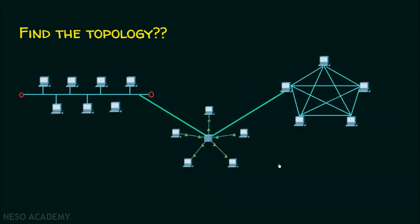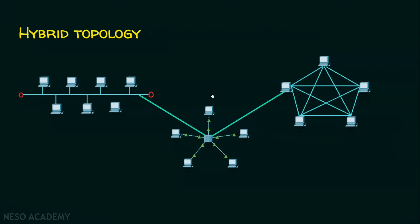Now there is a question — what is the topology shown in the scenario? If you observe, there is a bus topology, a star topology, and a mesh topology, all connected to each other. Can we give a single name for this? Yes — this is an example of a hybrid topology, where one or more different topologies are combined.